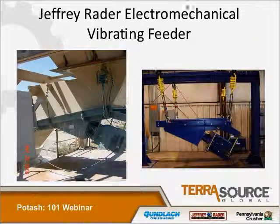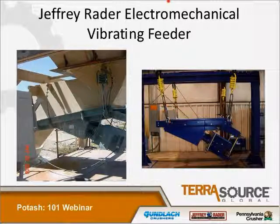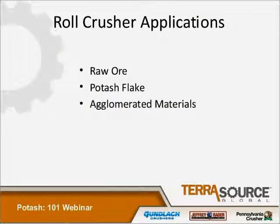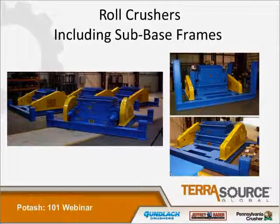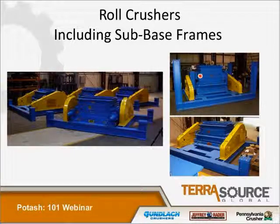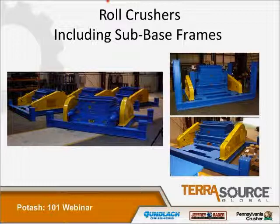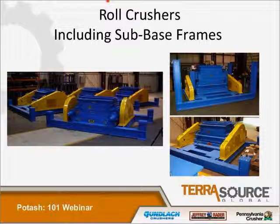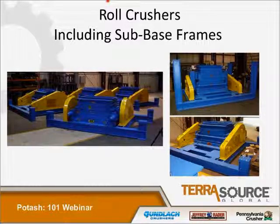It's very important to feed the crushers properly and spread the material for proper wear on the impactors or the roll crushers. Roll crusher applications include raw ore, hot ash flake, and agglomerated materials. Roll crushers can be 2-roll single stage or 4-roll double stage. We can also put the equipment on common bases. The common base supports not only the crusher but also the guards, the motors, lubrication systems, controls, and any other equipment you might want to attach.